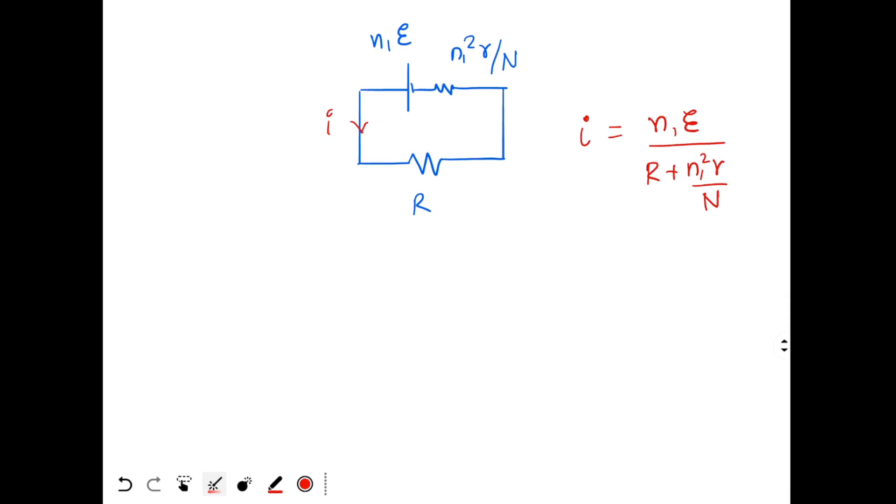So we have found this current. Now we have to find the condition for the current to be maximum. See in this formula, EMF is constant, R is constant, small r and capital N are constant. The only variable is N1. So for maximum current.